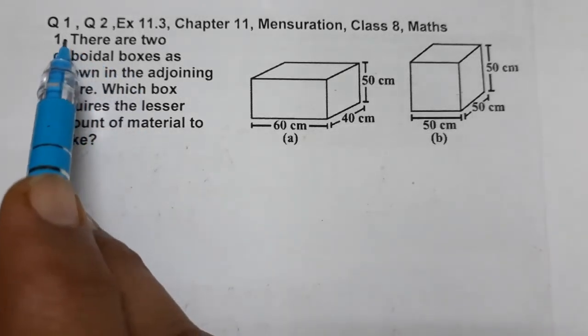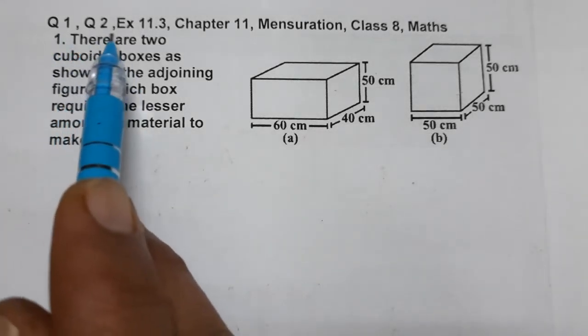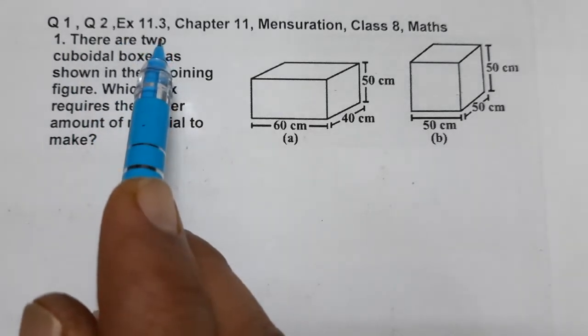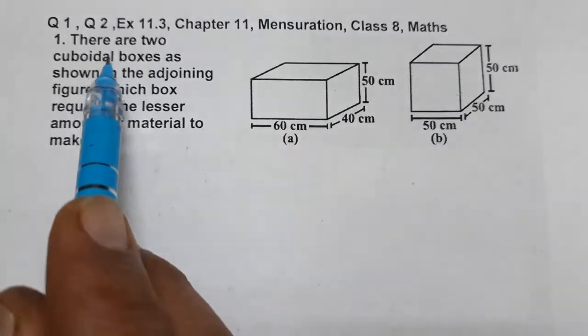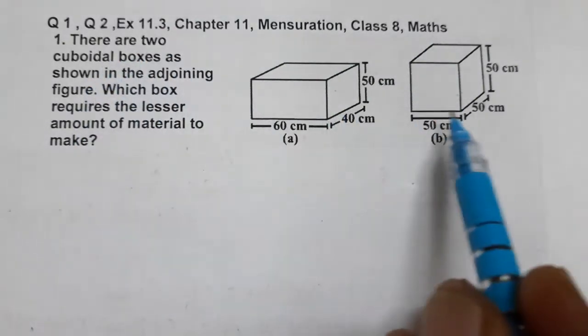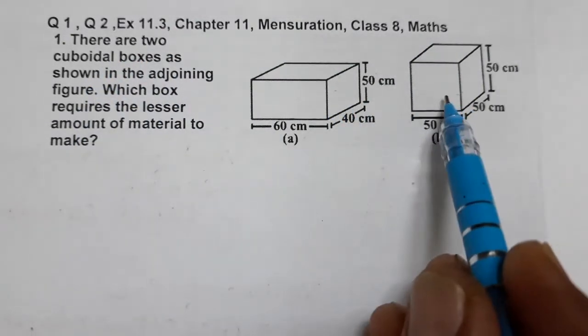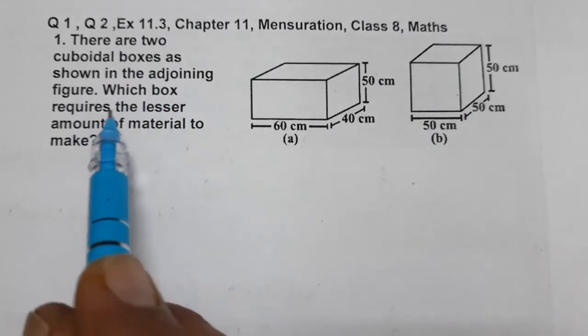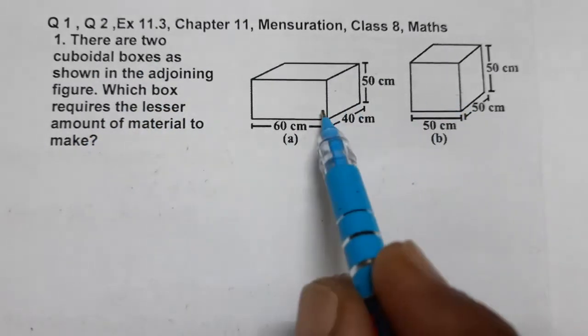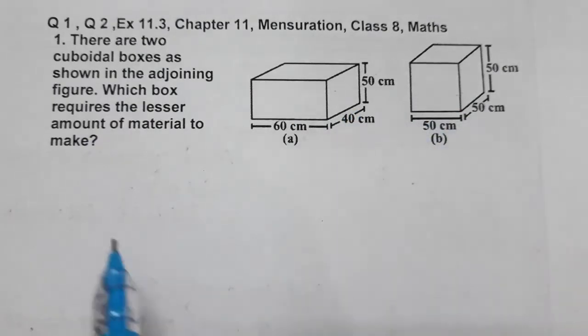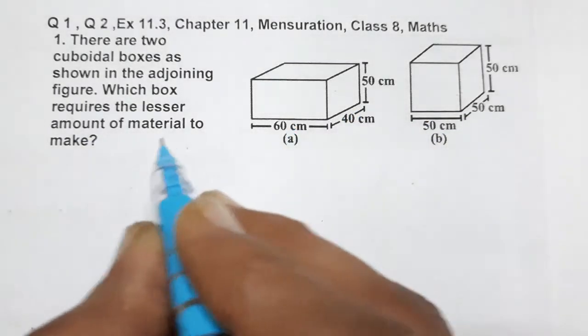Hello students, today we are going to do question 1 and 2 of exercise 11.3, Chapter 11 Mensuration, Class 8 Maths. There are two cuboidal boxes as shown in the adjoining figure. Which box requires the lesser amount of material to make? To find which box requires less material, we need to find the total surface area of both boxes.